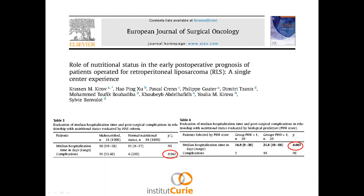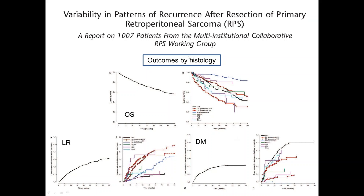Another risk factor is nutritional status — a paper from our institution shows that good nutritional status results in fewer complications and shorter hospitalization. The paper with 1,007 patients shows outcomes by histology: overall survival 67% at five years. Tumors that do best are well-differentiated liposarcomas, followed by leiomyosarcomas, then de-differentiated liposarcomas grade 3.